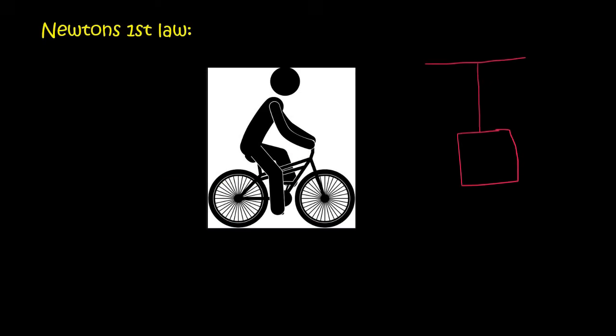Now the next part I want to talk about is, let's say we've got this object hanging from the ceiling. So this is the ceiling, and then here we've got some object. Now let's say it's just hanging there. That means it's not moving.